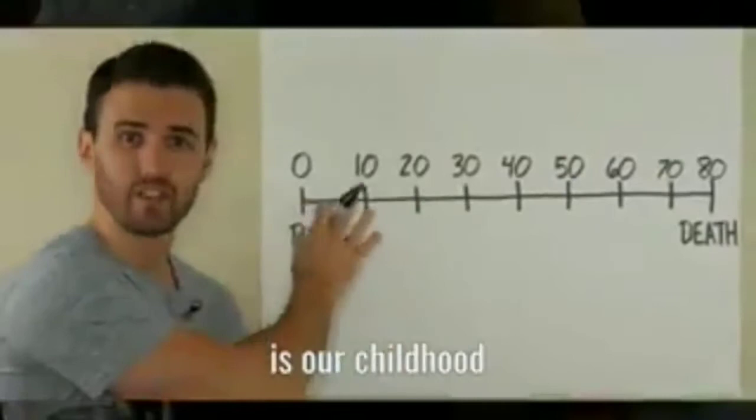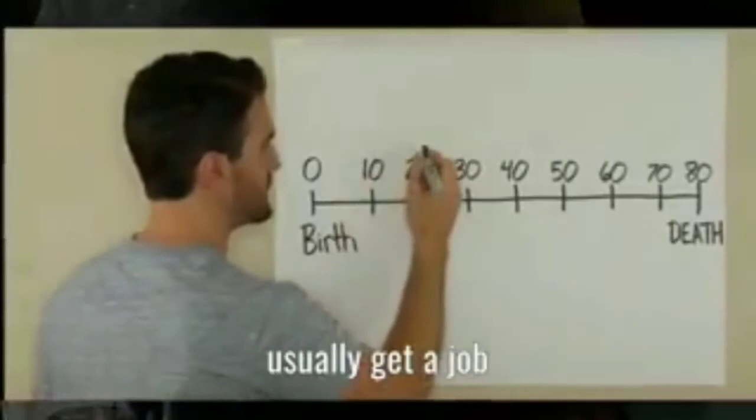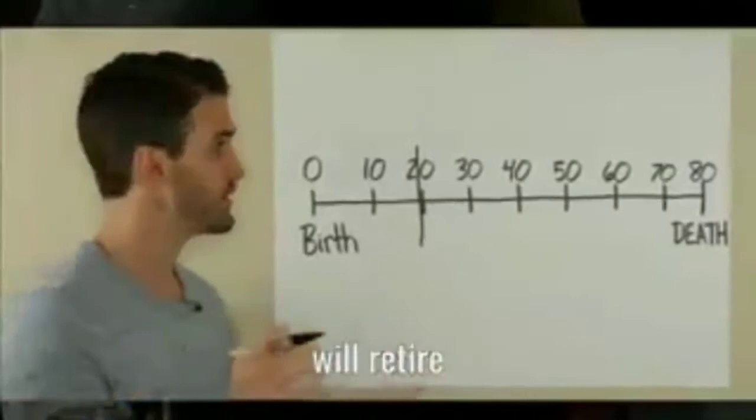See this right here is our childhood and our teenage years and we have a lot of fun. And most of us usually get a job right around here at 20 years old. And most people will retire at the age of 65.